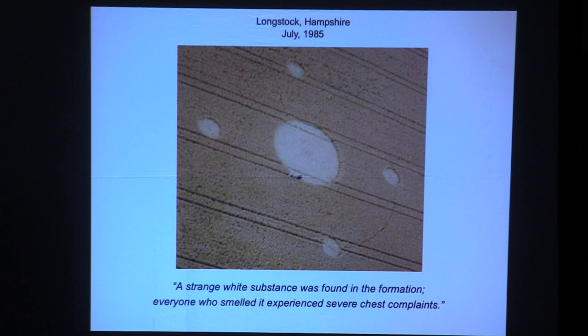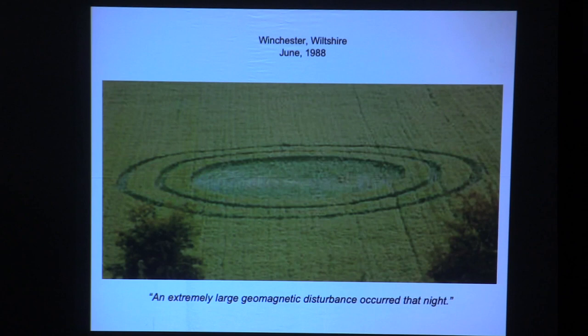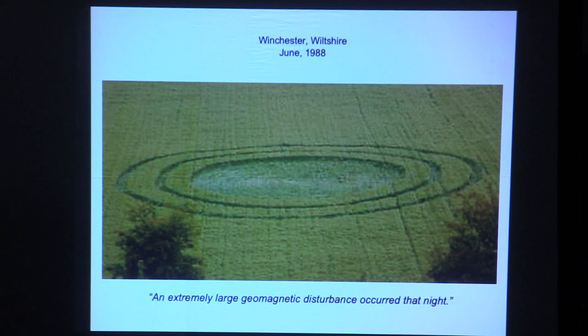A strange white substance — remember Robert Plott found a strange white substance — was found in a formation, and everyone who smelled it experienced severe chest complaints. Now we're getting more than simple circles. Notice the swirled pattern. There were three of these in one field. Two rings. An extremely large geomagnetic disturbance occurred that night, according to a report.